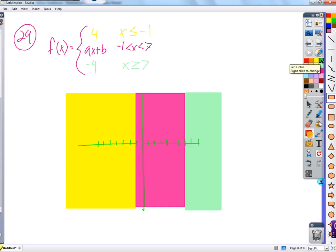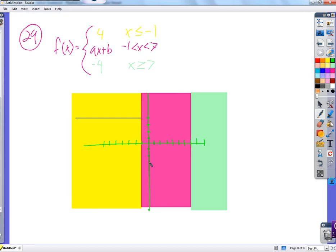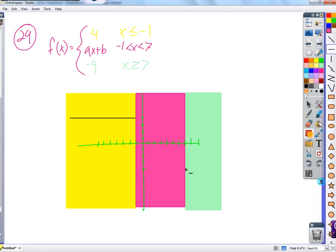From negative one and less than negative one, we're going to use the yellow one. If x is greater than or equal to seven, we're going to use the green region. The middle guy, we don't know everything about it quite yet. That's what this problem is asking us to do.